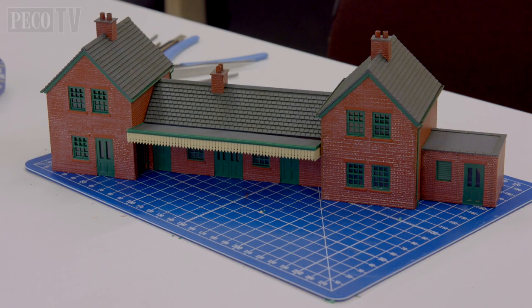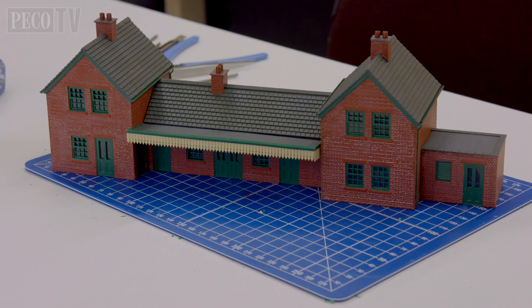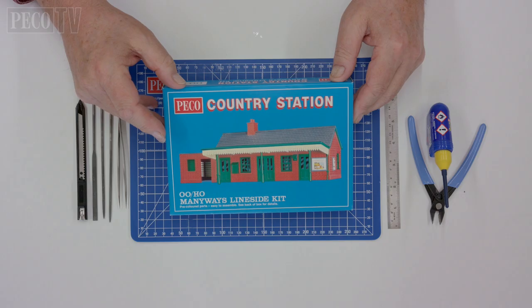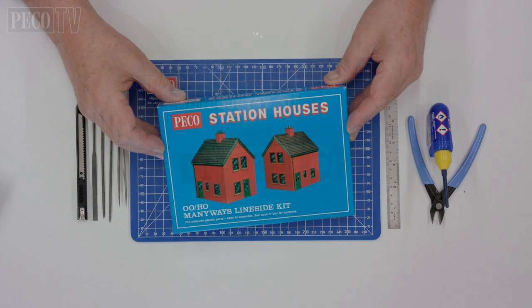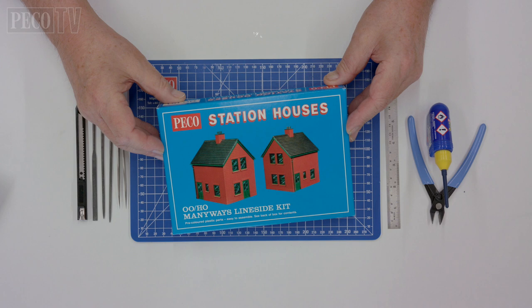In this second film we're going to show you how to combine two plastic kits, paint and weather them. This time we'll be looking at combining the country station with the station house in 00 scale, which are both part of the Many Ways line side range from Pico.